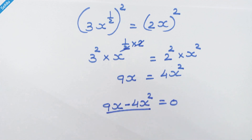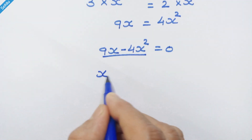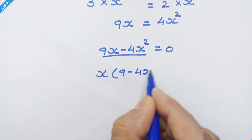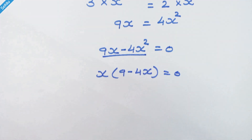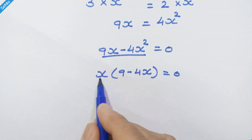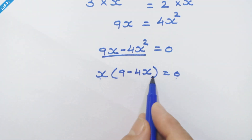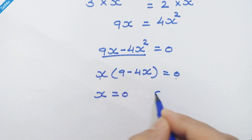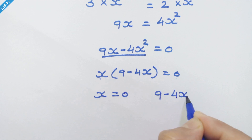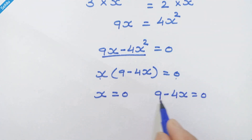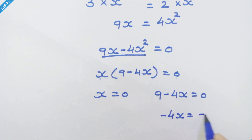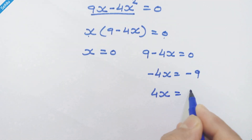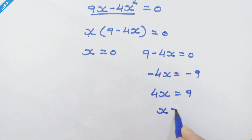Let's take x as a common factor. So we have x times (9 minus 4x) is equal to 0. So we can equate: x equals 0, and 9 minus 4x equals 0. Moving 9 to the other side gives minus 4x equals minus 9, so 4x equals 9, therefore x equals 9/4.